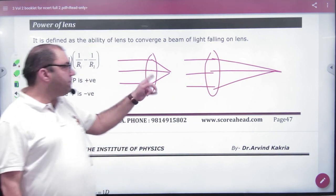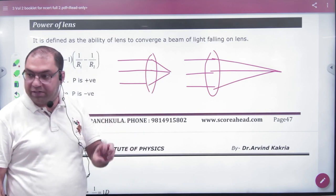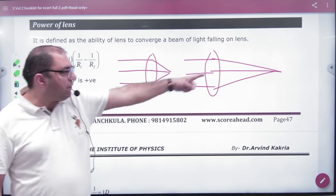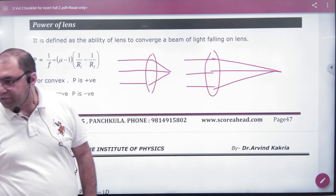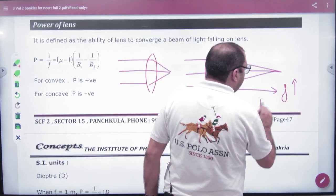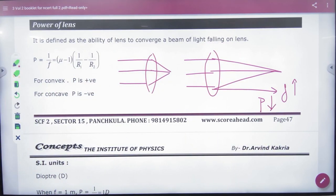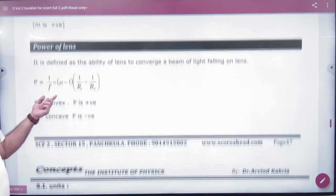Now look, this one is focused here. The one that focuses quickly has more power, and this one has less power. So whoever's focal length is bigger, the power will obviously be small. Power is inversely proportional to focal length. So one by focal length is the formula.